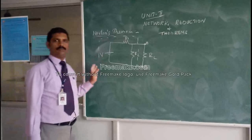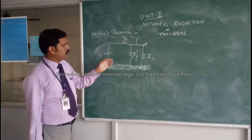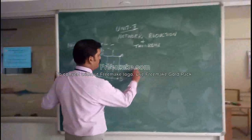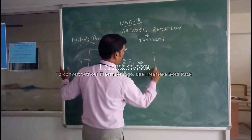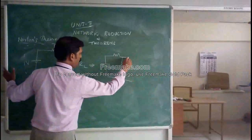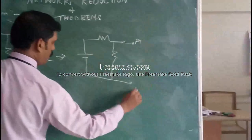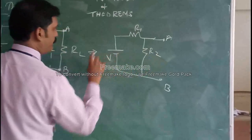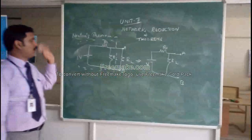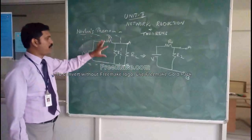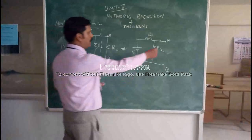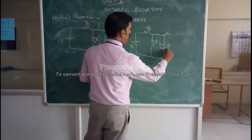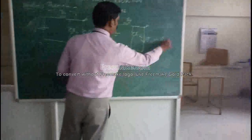Now we are going to solve this circuit. The first step is to remove the load resistance. I have changed the circuit accordingly — I have removed the load resistance and kept those terminals open. Here is R1, R2, and the voltage source V. Now the aim is to short-circuit the terminals A and B and find the Norton current, also called the short-circuit current.